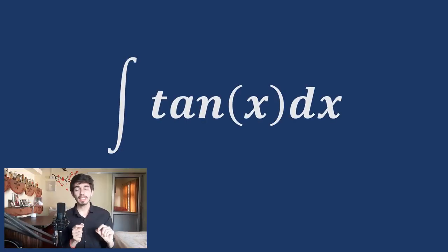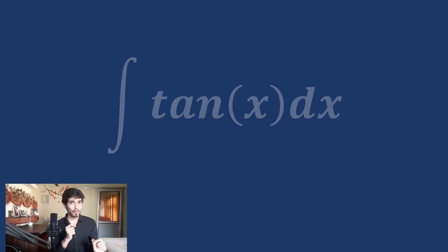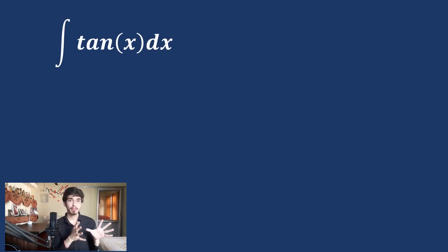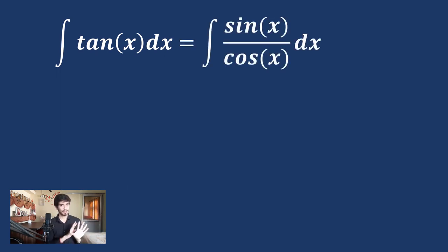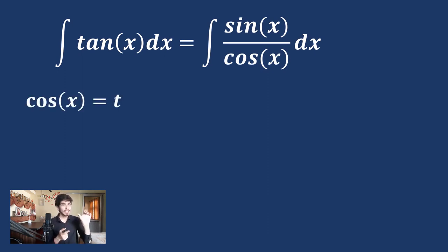Now, can you tell me the integration of tan x? There was no differentiation formula whose result was tan x, so how do we find this integral? We will solve this using one of the most important methods of integration: the method of substitution. We can write tan x as sin x divided by cos x. Now write cos x as t — this is substitution because we are substituting one variable with another.